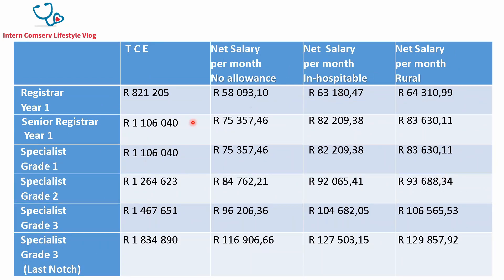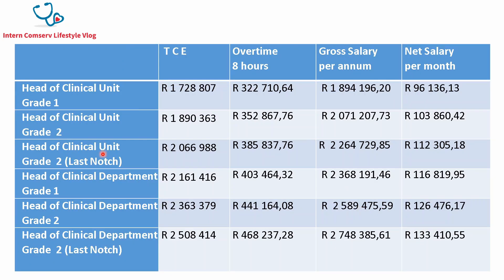Now let's look at the effect of the inhospitable and rural allowances. As a registrar your salary increases by around 5,000 rand for inhospitable and 6,000 rand for rural, so from 58,093 you move up to 64,310. The senior registrar and specialist grade one similarly move up about 7,000 to 8,000 rand. Specialist grade two moves up between 8,000 and 9,000 rand, and specialist grade three moves up between 8,000 and 10,000 rand per month.